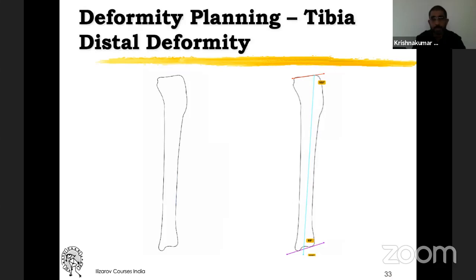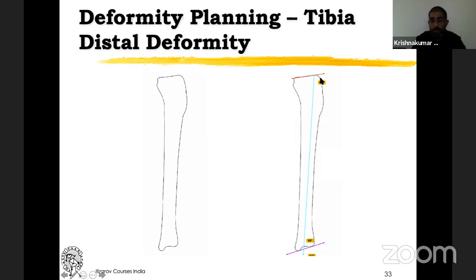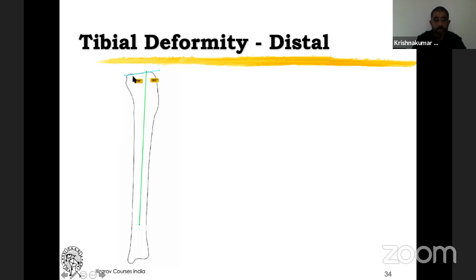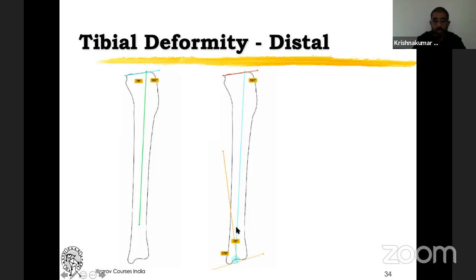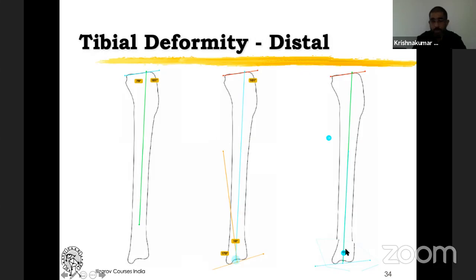For a distal deformity, the steps are the same. Draw the axis, check PPTA and ADTA. Here the posterior proximal tibial angle is 78 degrees — normal — and the anterior distal tibial angle is 69 degrees — abnormal. So it is a distal deformity. The proximal axis is the mid-diaphyseal line, which in relation to the joint orientation line gives 79 degrees — within normal range. Drawing the distal joint orientation line at an angle of 81 degrees gives the distal axis, with a 10-degree deformity between the two axes. I use osteotomy rule 2 because the cora is very close to the anterior joint, so I do the osteotomy more proximal, and there is a slight acceptable anterior translation.